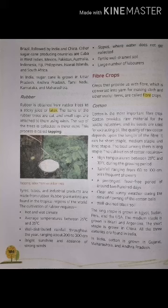Well-drained black soil is preferred for cotton production. The long staple is grown in Egypt, Sudan, Peru and the USA. The medium staple is grown in Brazil and Argentina. The short staple is grown in China and India. All three varieties are found in India. In India, cotton is grown in Gujarat, Maharashtra and Andhra Pradesh.